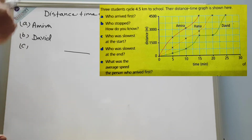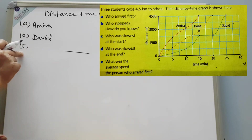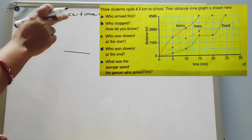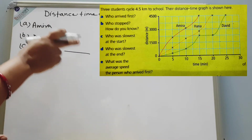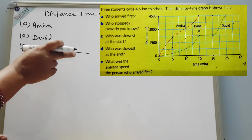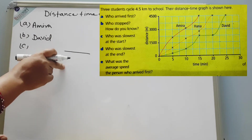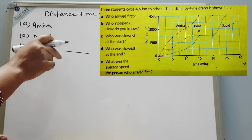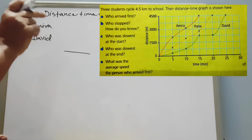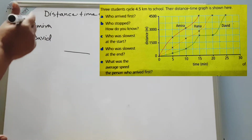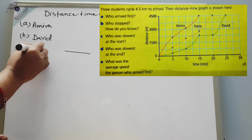Question C is: who was slowest at the start? Looking at all three people, David is the one who took five minutes to cover very little distance compared to the other two. So the answer is David.